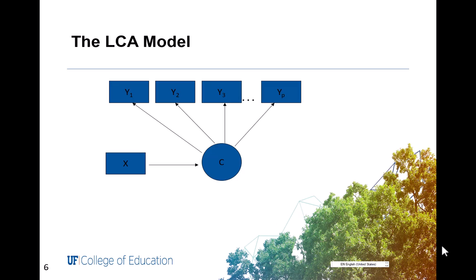we refer to that as a latent profile analysis. Or you can have a mixture of continuous and categorical indicators. In this lesson, I will only refer to latent class analysis, so the indicators are categorical. And here we have X, which is a predictor of class membership.